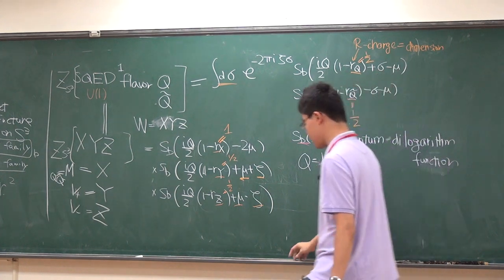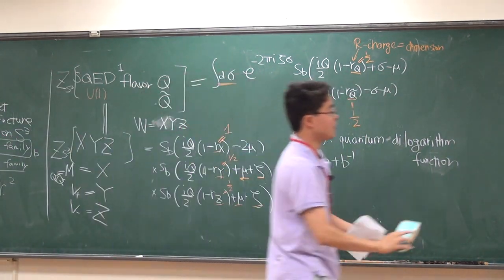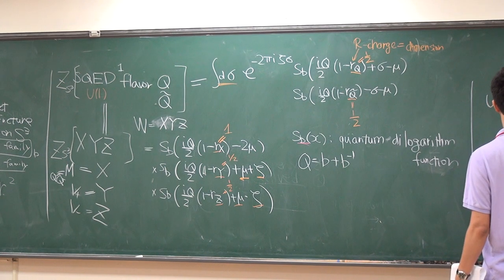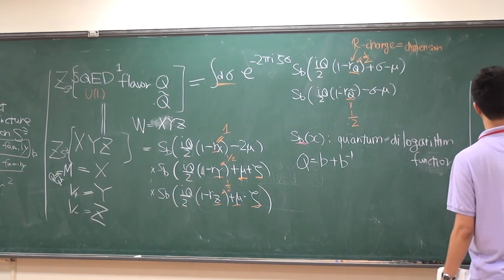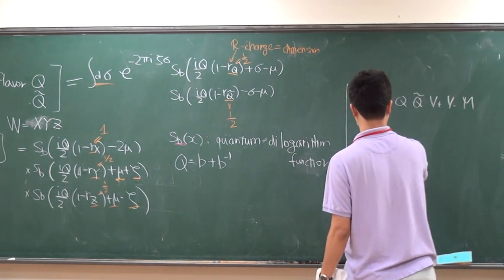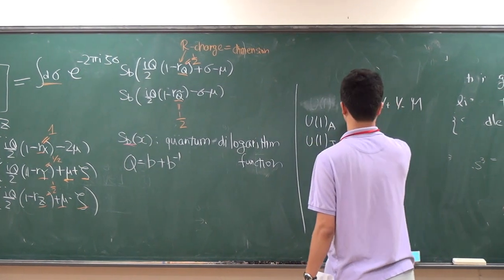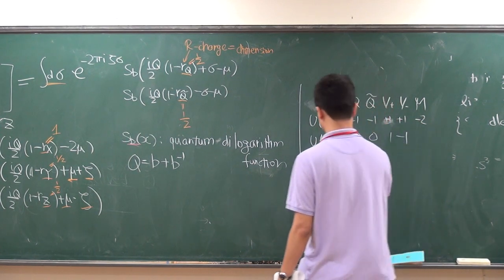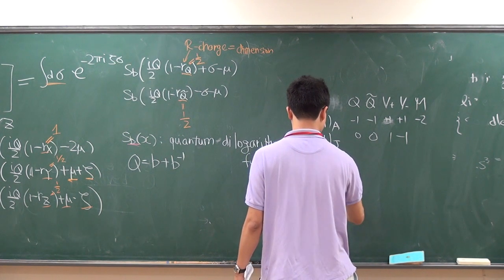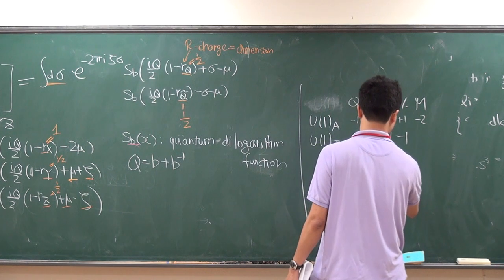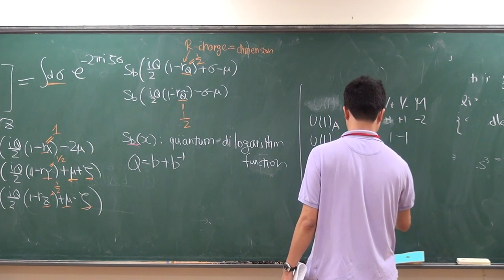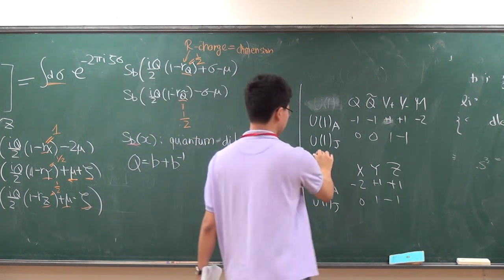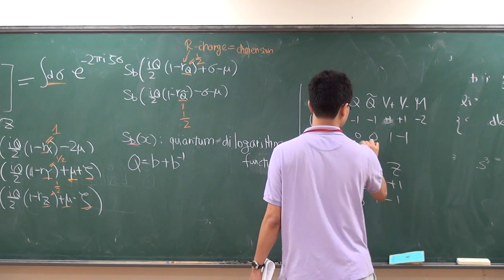So what are these parameters? These represent the charge assignments. So yesterday towards the end I explained the connection, I explained all the charges. So we have Q, Q-tilde, and B-plus, B-minus, M. The gauge charge — so these are U(1)-axial: I took it to minus 1, minus 2, so there is plus 1, plus 1. U(1)_J: that's plus 1, minus 1. And then in the XYZ model there is the same one, X, Y, Z. So minus 2, plus 1, plus 1, plus 1, and then 1, minus 1. The gauge charge is plus 1, minus 1, 0, 0.